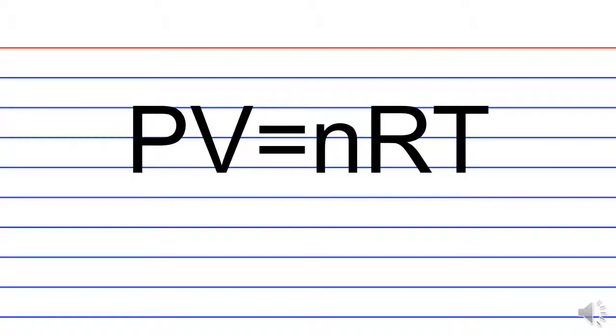That would be PV equals nRT, and R is the universal gas constant, which is measured in two ways. You can have it be 8.314 joules per mole kelvin, or alternatively, 0.082 liters times atmospheres over moles kelvin. Either of those are acceptable depending on what you're trying to get out of the Ideal Gas Law.